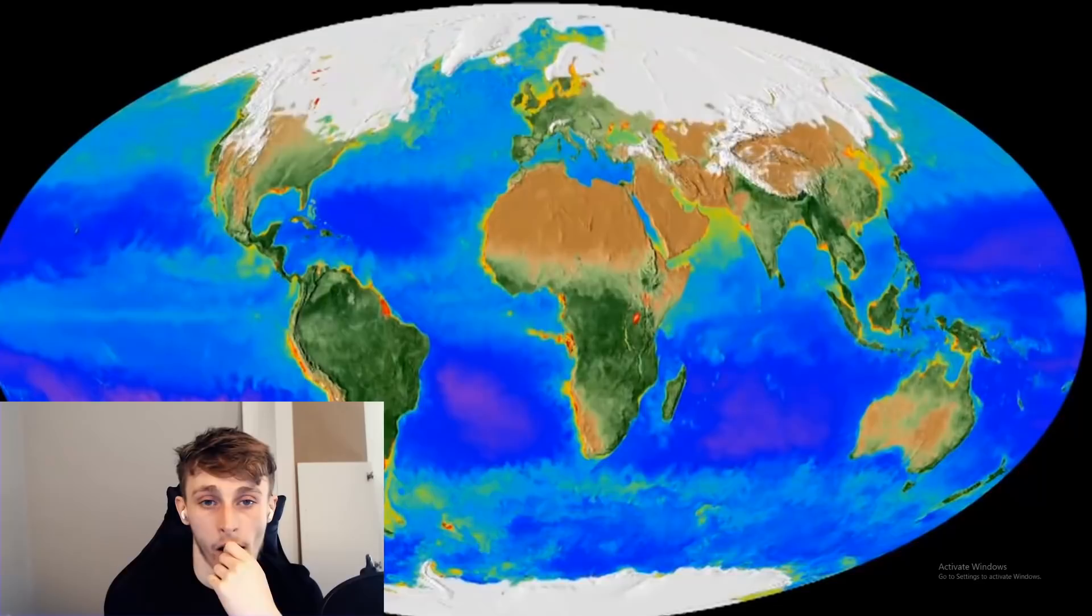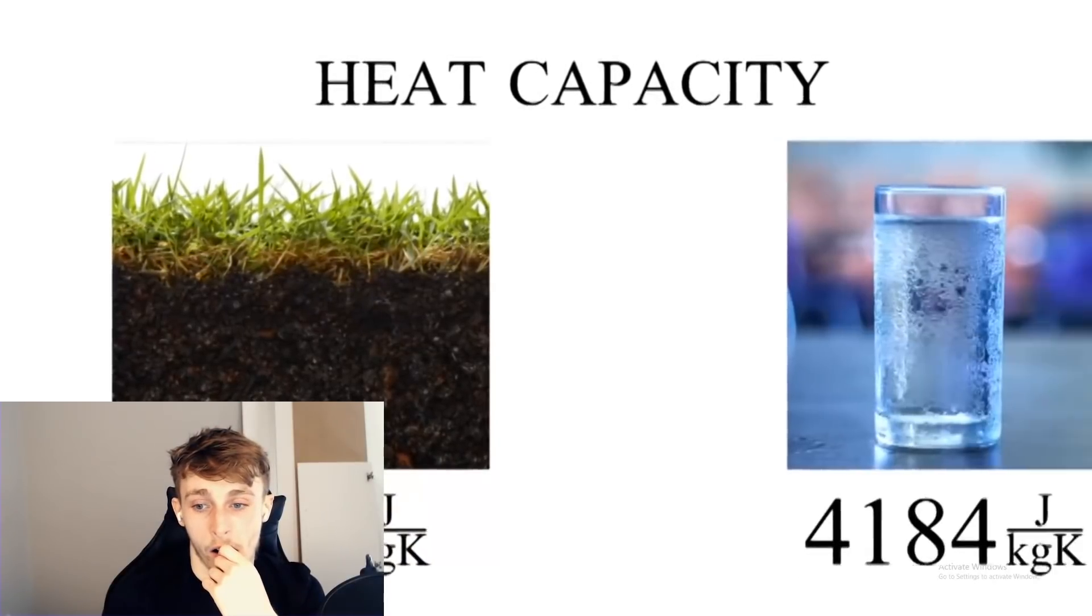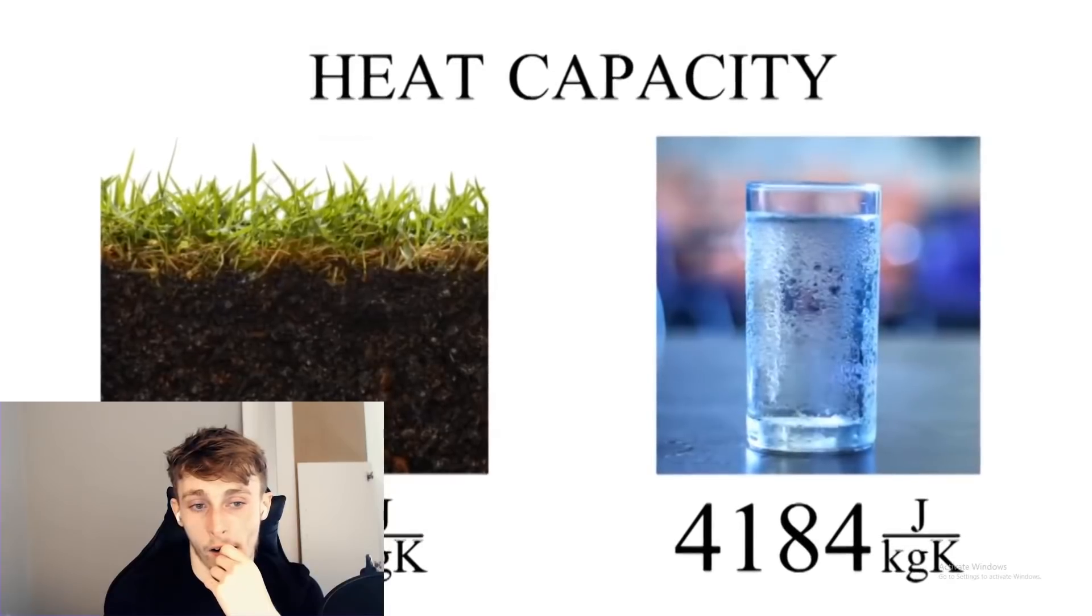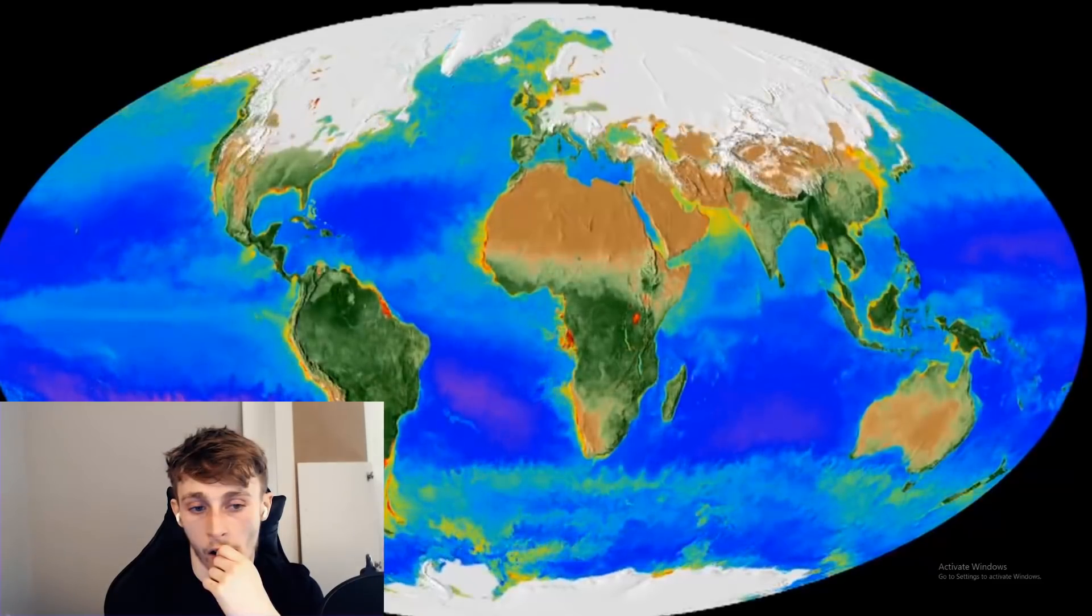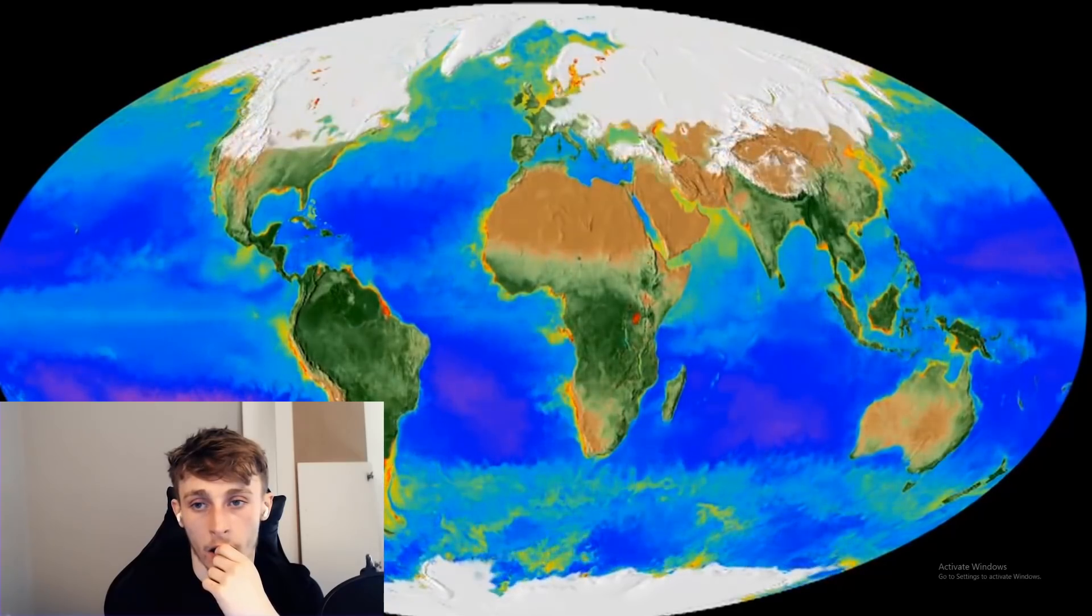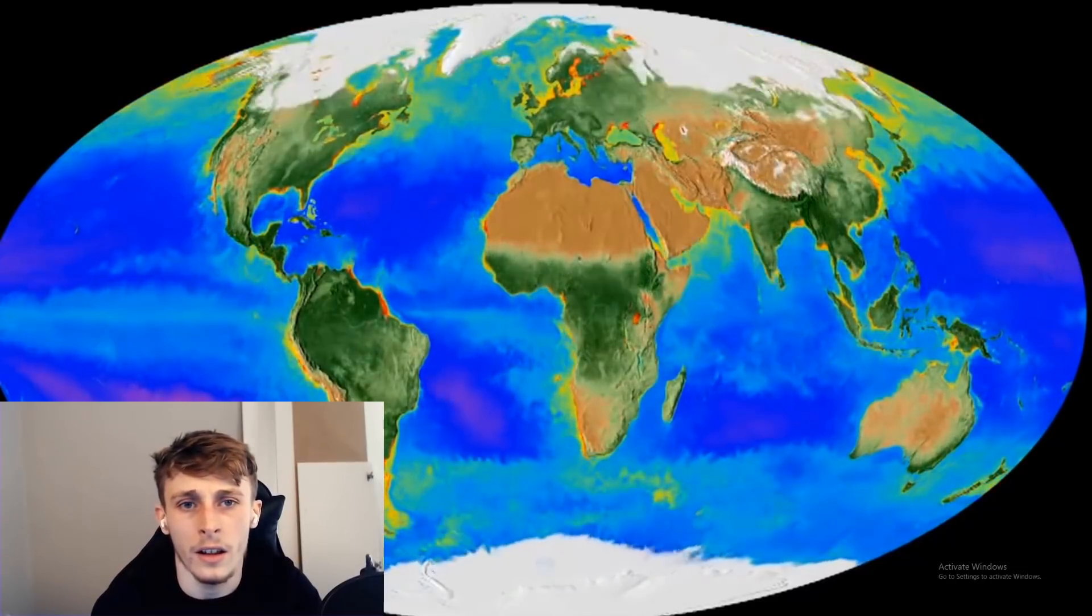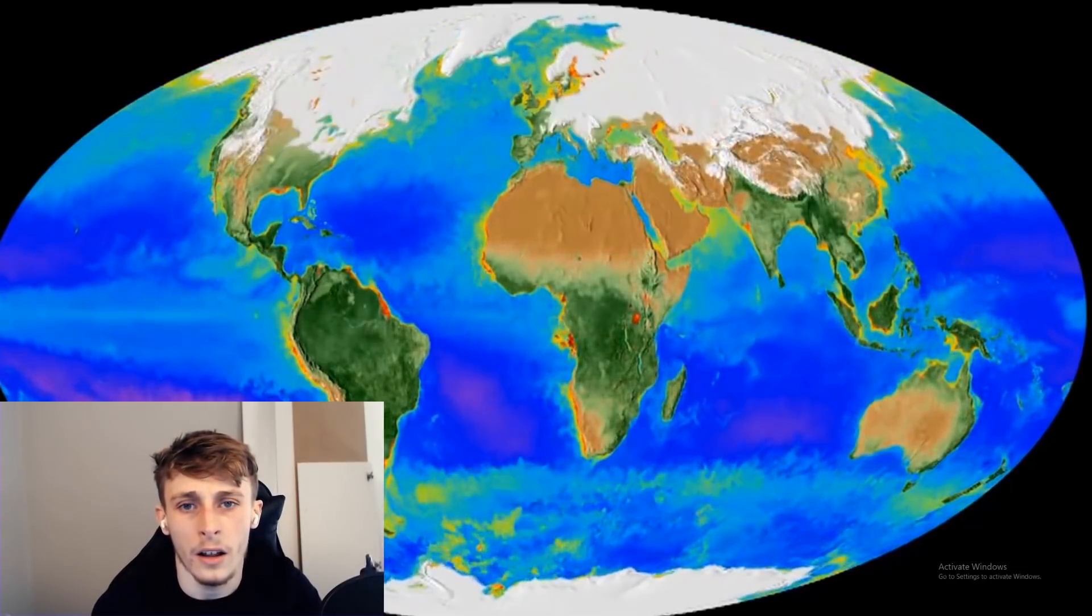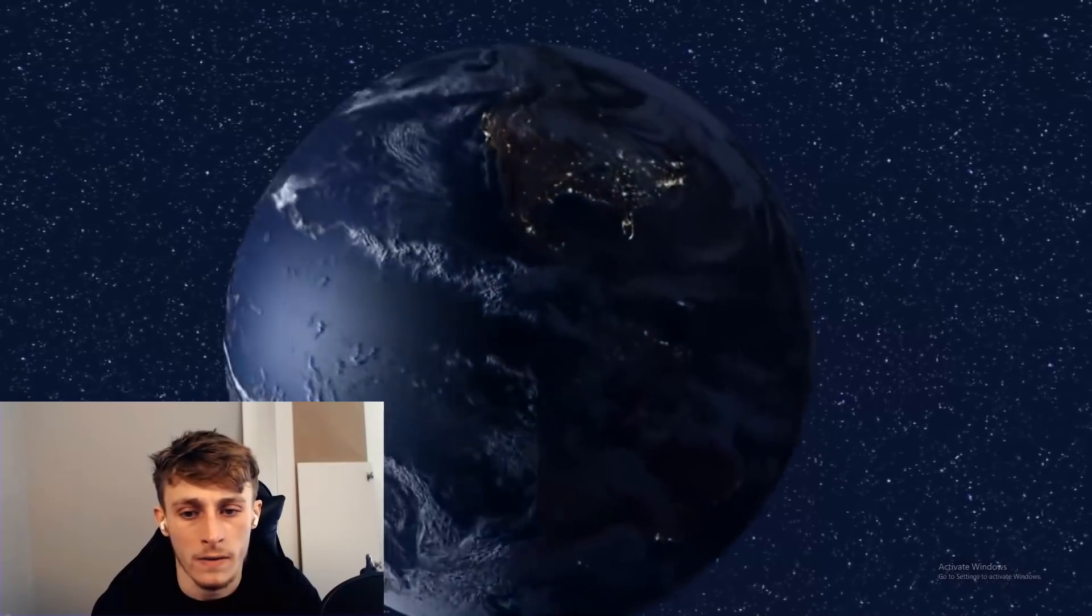The northern and southern hemispheres both contain lots of ice, but there's more ice in the north because there's more land. Land has a lower heat capacity than water, which means that water doesn't change temperature as easily as land does. This is why coastal regions are generally more mild and why ice forms more easily on land. Just look at the difference between the northern and southern hemispheres.